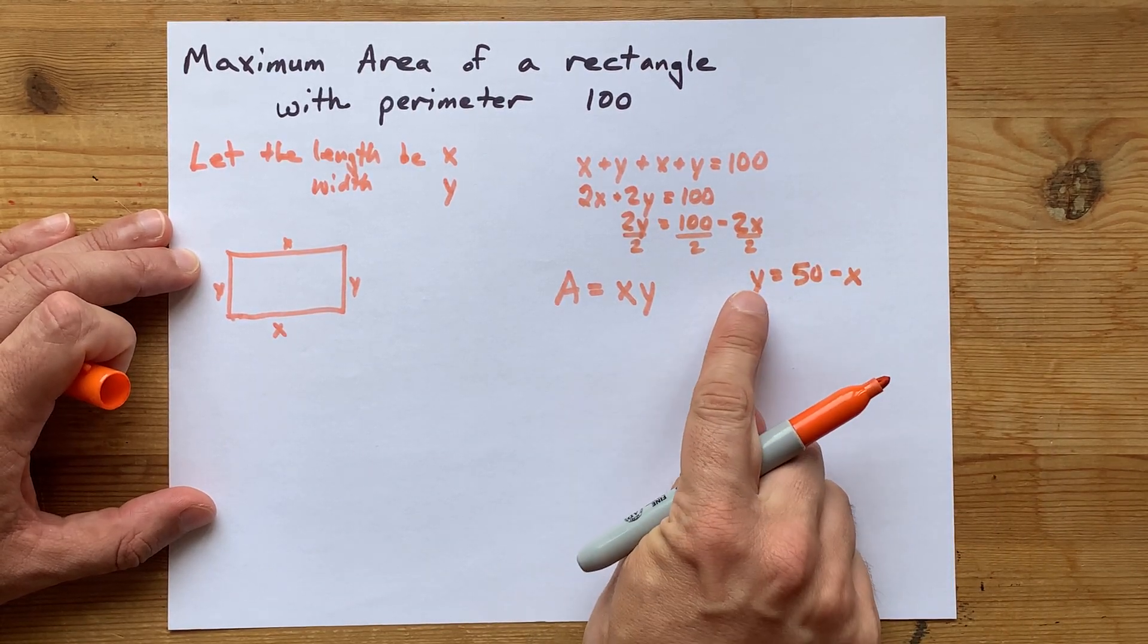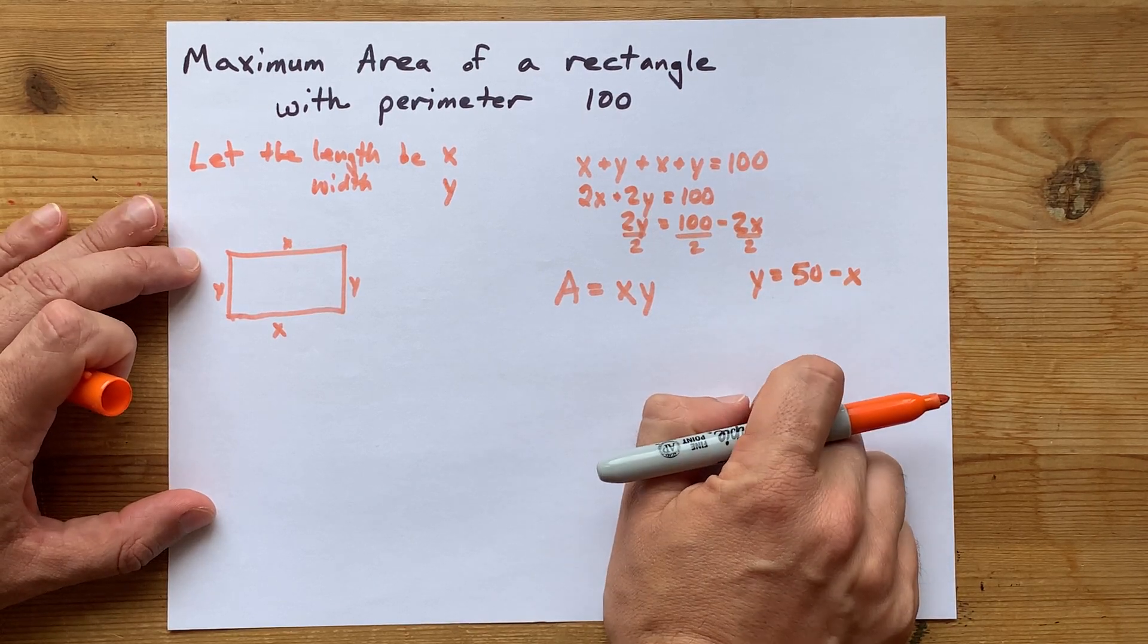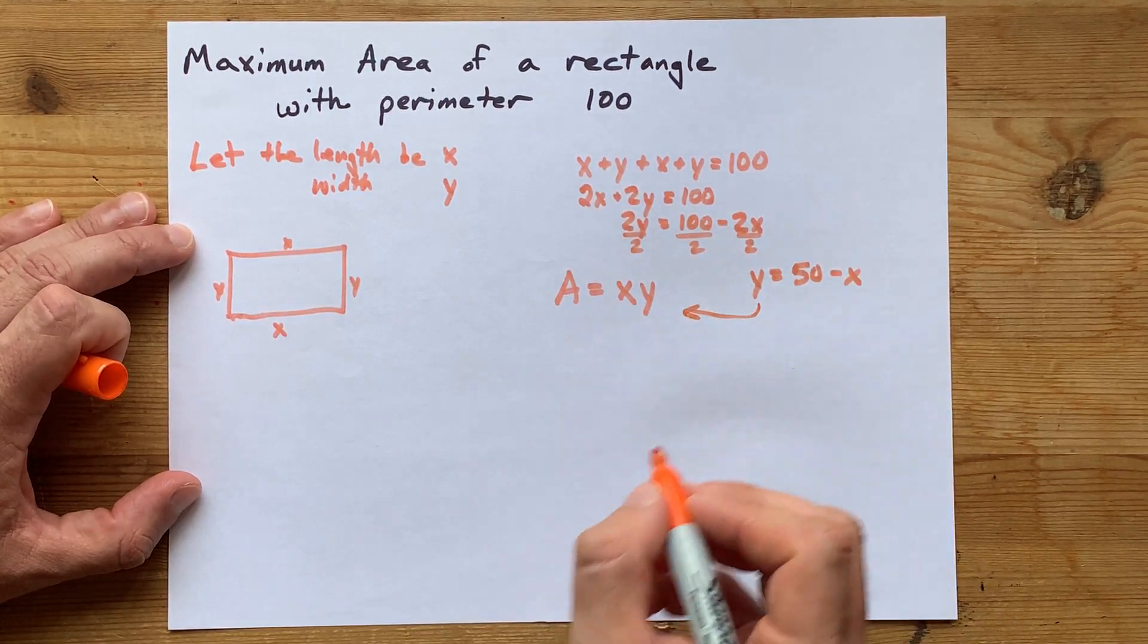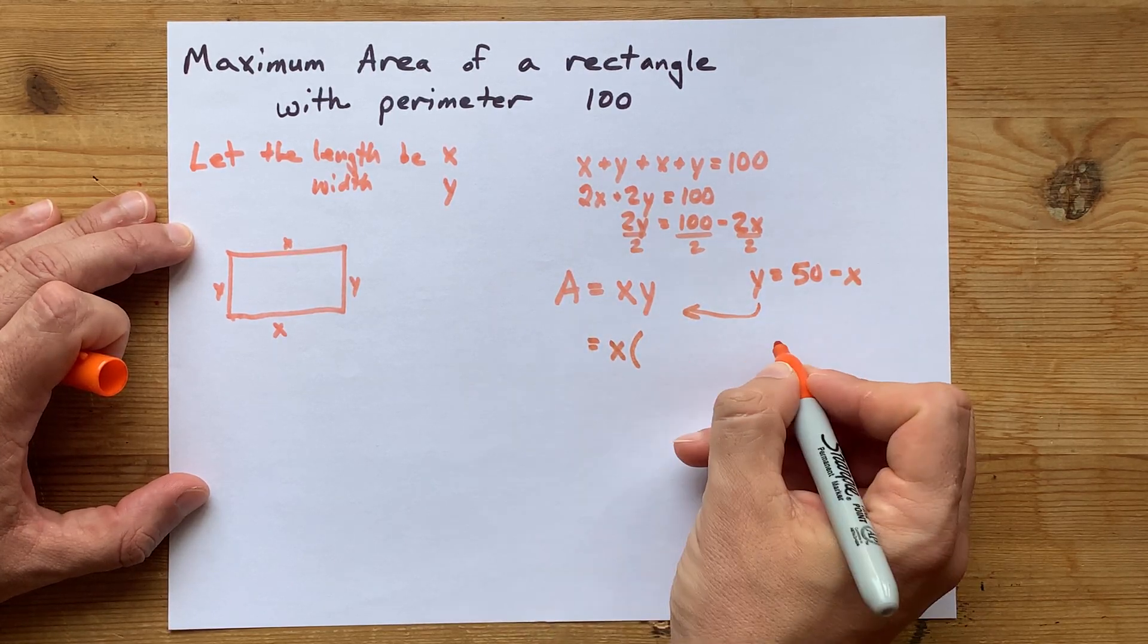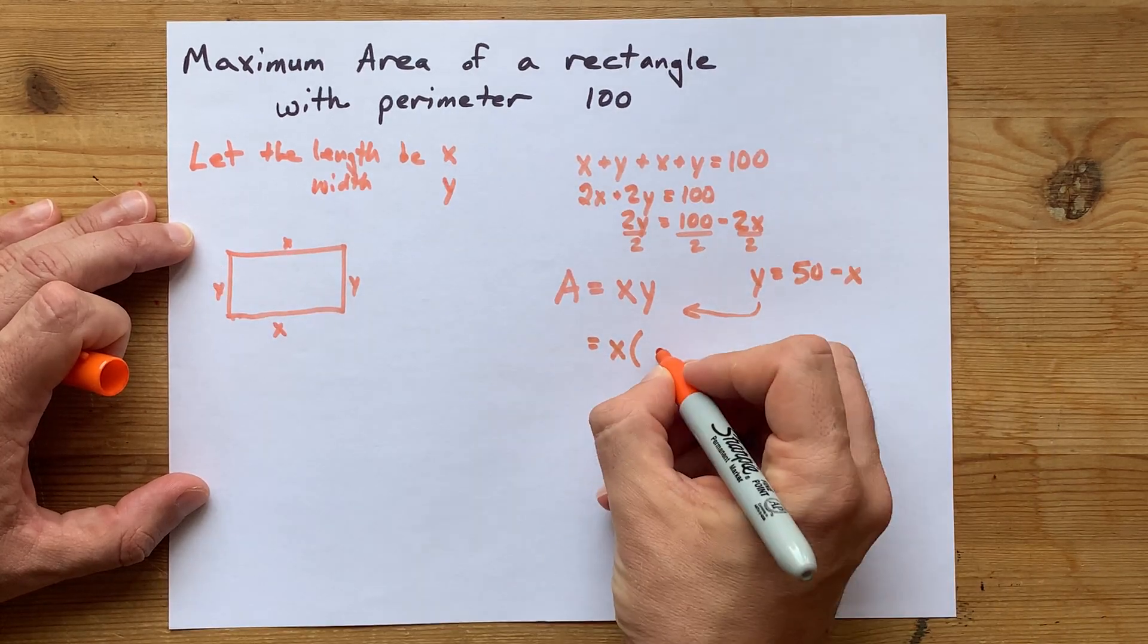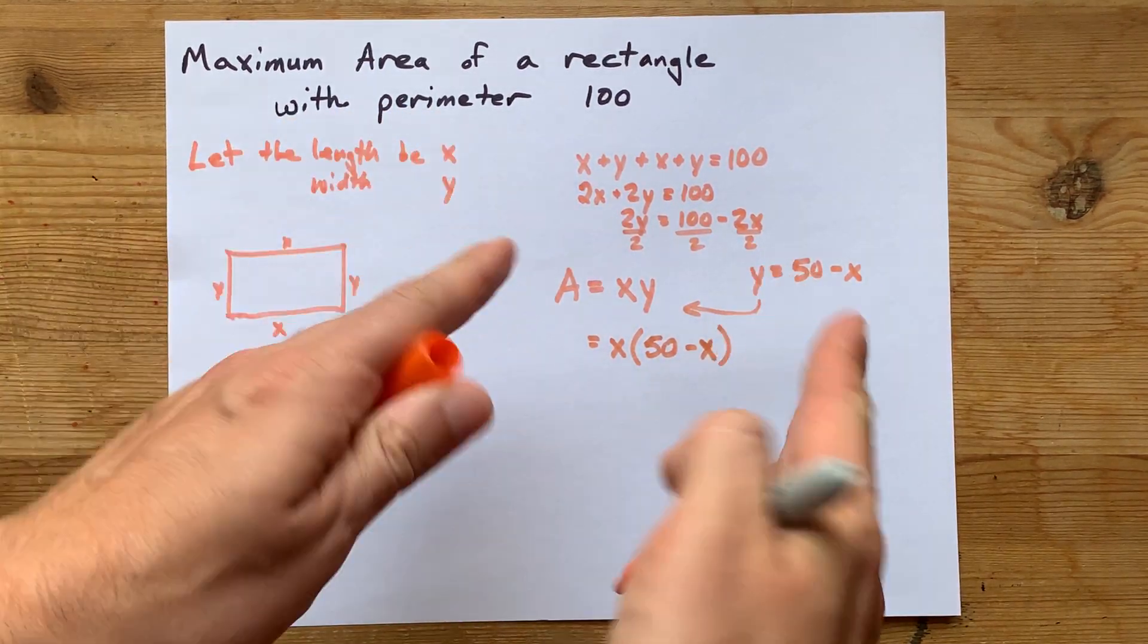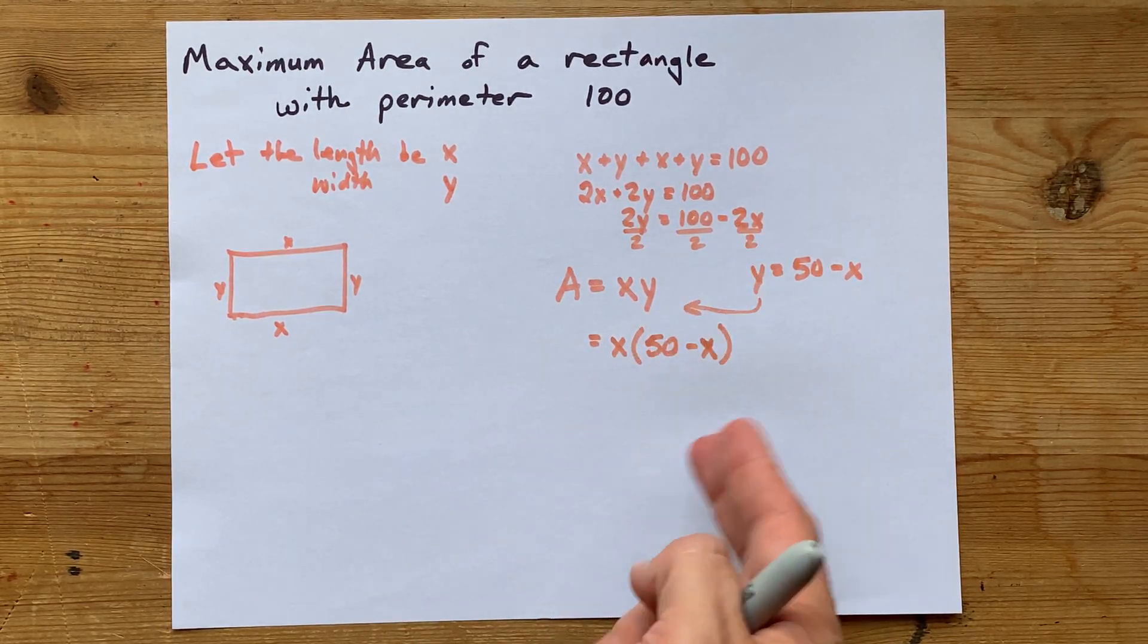Now, I've got an isolated version of y that's based only on x. What you can do from that point is substitute this into your area equation. x times y is now x times whatever y equals. y equals 50 minus x. So, I'm going to put that there where y goes. Whenever I do a substitution, I like putting brackets around it. That helps me remember that this whole chunk is what y is.